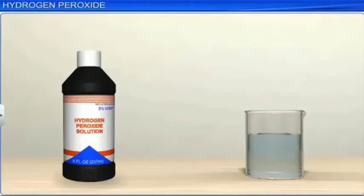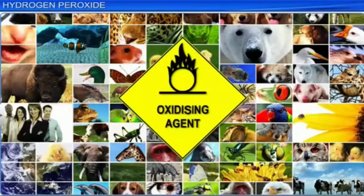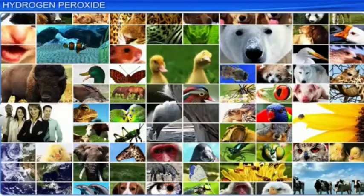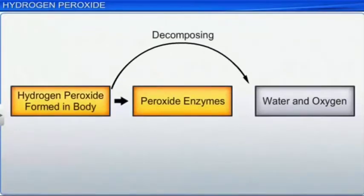Hydrogen peroxide is a very pale blue liquid and appears colorless in a dilute solution. It is naturally produced in organisms as a byproduct of oxygen metabolism. It is a strong oxidizing agent. In fact, it is such a highly reactive oxygen species that all living aerobes form peroxide enzymes to decompose the hydrogen peroxide formed within the body into water and oxygen harmlessly and catalytically.